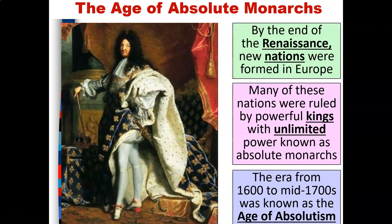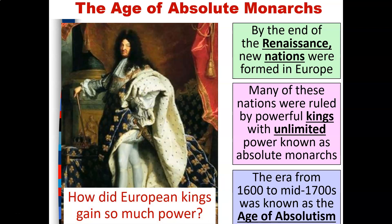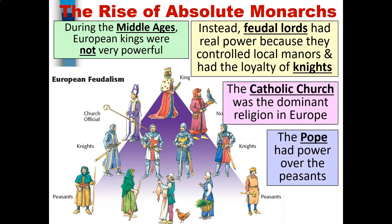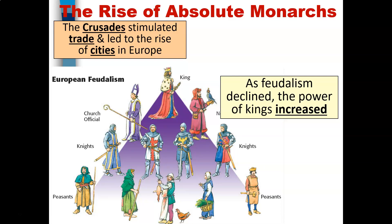The era from about the 1600s all the way to the mid-1700s became known as the Age of Absolutism. But how were European kings able to gain so much power? During the Middle Ages, European kings were not very powerful. Instead, feudal lords had real power because they controlled local manors and had the loyalty of knights. The Catholic Church was the dominant religion in Europe and the pope had power over the peasants. The Crusades stimulated trade and led to the rise of cities, and as feudalism declined, the power of kings increased.